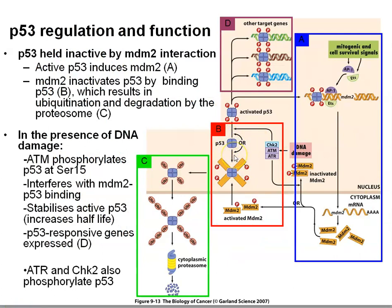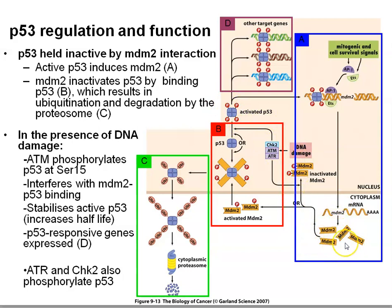p53 is not the only thing that becomes mutated in cancer. If we lose the p53 gene, we lose all of this cycle and don't get the p53 response genes expressed. Alternatively, cancer cells sometimes lose the ATM, ATR, or CHK2 genes so that p53 is no longer activated in the presence of DNA damage. Other cancer cells overexpress MDM2, so that as soon as p53 is produced it's immediately degraded by the proteasome, resulting in a p53-deficient cell.